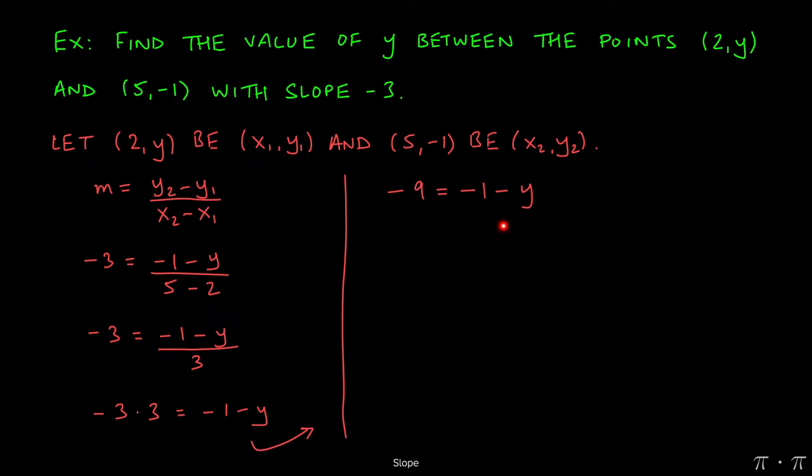Now remember we're still trying to solve for y, so I need to get rid of this -1 next. Because the 1 is being subtracted, when I move it over to the other side I'm going to have to add it. So this gives us -9 + 1 equals -y.